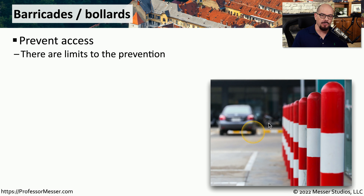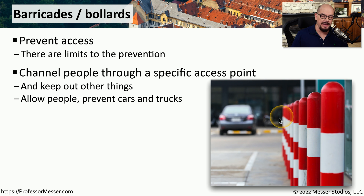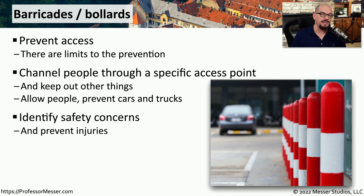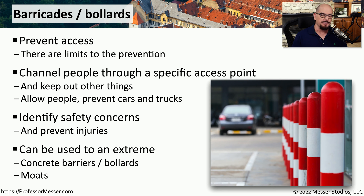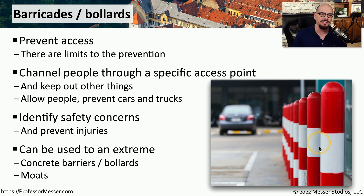If you look outside your office building, you might see brightly colored bars or concrete posts. These are barricades or bollards, and they may prevent all access to a particular area or allow only certain types of access. For example, you might have barricades that allow people to walk through but prevent any type of vehicle from going through that particular area — also serving as a safety measure protecting people from moving vehicles. There are many different ways to implement these barriers. You might see very large planters that are actually solid concrete going into the ground to prevent anyone from driving through. And some data centers are literally surrounded by water, effectively creating a moat with one way in and one way out, greatly limiting who can gain access and ensuring everyone checks in at the guardhouse first.